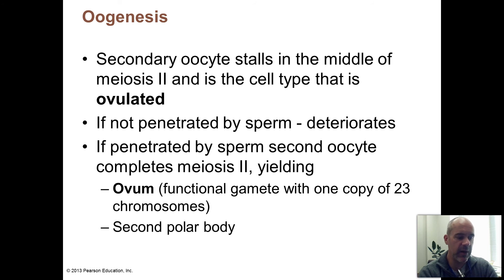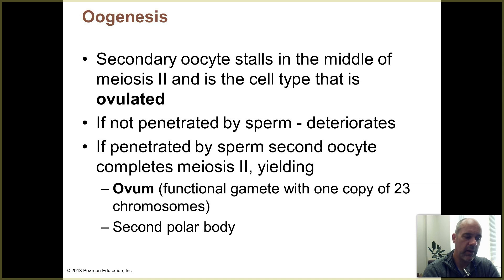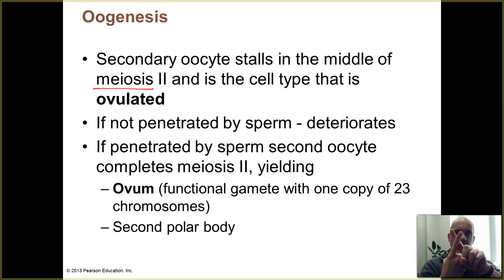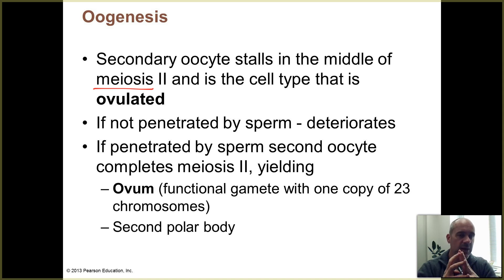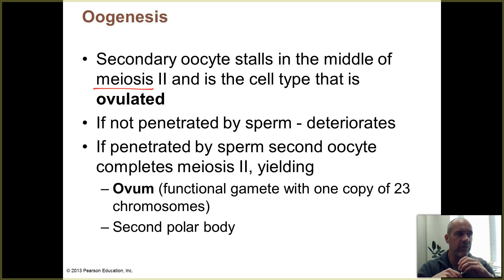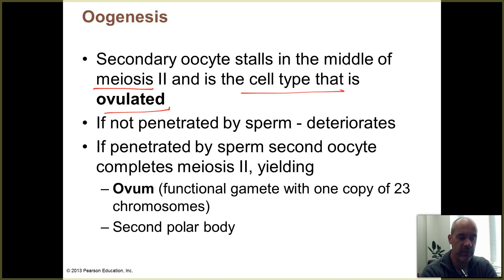The secondary oocyte starts undergoing the processes needed for meiosis 2. In meiosis 2, the 23 duplicated chromosomes would segregate the two copies of each into two daughter cells. However, this doesn't occur in the ovaries — the secondary oocyte gets ready to complete meiosis 2 but stalls. This is the cell type that actually gets ovulated and moves into the fallopian tube.